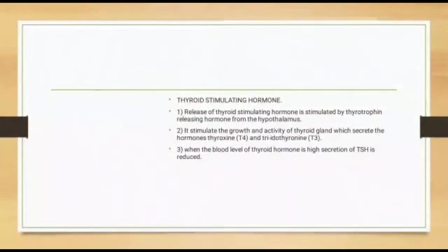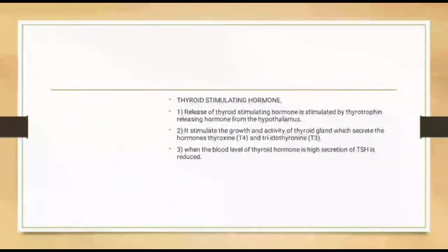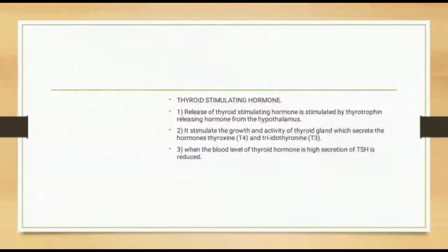The release of thyroid stimulating hormone is stimulated by thyrotropin releasing hormone from the hypothalamus. Thyroid stimulating hormone stimulates the growth and activity of the thyroid gland, which secretes the hormones thyroxine and triiodothyronine, known as T3 and T4. When the blood level of thyroid hormone is high, the secretion of thyroid stimulating hormone is reduced.